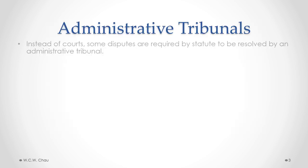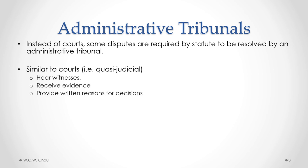Generally speaking, disputes between private parties are resolved by resorting to the public court system, which we've already looked at. Now, for some particular types of disputes, they are required by the relevant statute to be resolved by a specific administrative tribunal. Administrative tribunals are similar to courts — in other words, they are considered to be quasi-judicial — in that they can hear witnesses like a court, they can receive and consider evidence just like a court, and they also provide decisions based on written reasons prepared by the tribunal.